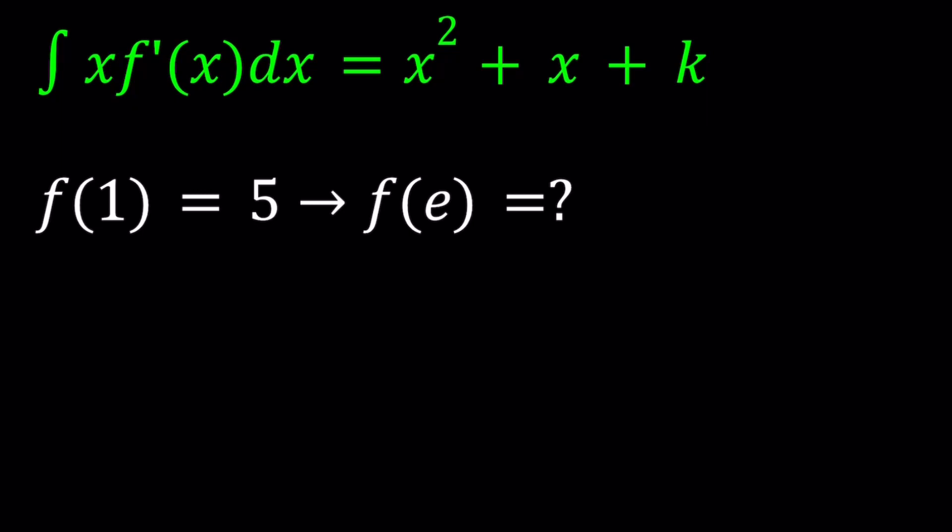So we have the integral of x times f prime of x dx equals x squared plus x plus k. And we're also given that f of 1 is equal to 5. And we're going to evaluate f of e, e being Euler's number.